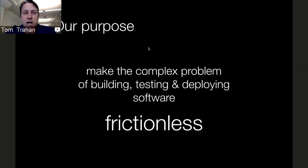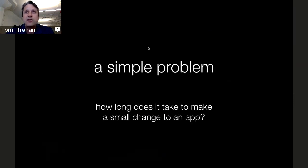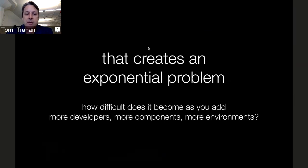The purpose of Shippable is to make the complex problem of building, testing, and deploying software frictionless. The goal has always been to help enable software delivery — to make it as automated, efficient, and fast as possible, to discover bugs early in the process, and enable software changes to make it all the way into a usable state. The challenge is it starts with a simple question: how long does it take to make a small change to an application? But it becomes more complex when you ask how long it takes to get that change to the customer, and exponentially harder as you add more developers, components, and environments.